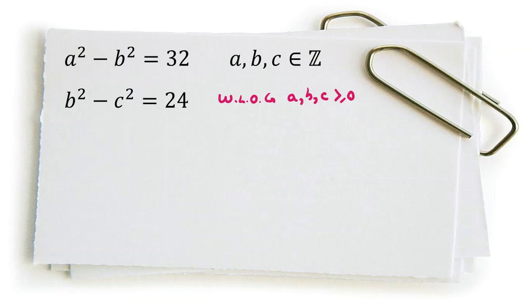Now let's consider, from 32, we know that a squared minus b squared equals 32. If we factorize, a minus b times a plus b is 32. Because a and b are positive integers greater than or equal to 0,